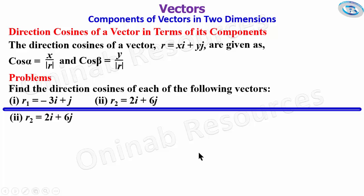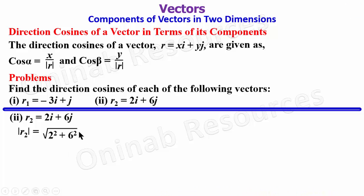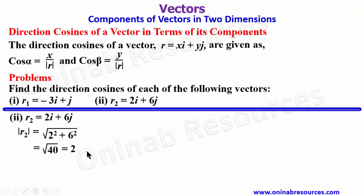We then find the direction cosines of r2. The modulus of r2 is √(2² + 6²) = √(4 + 36) = √40 = 2√10.